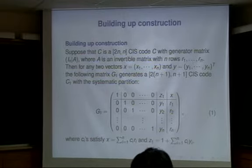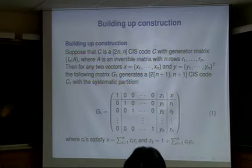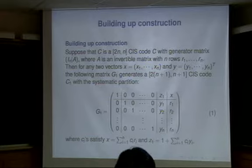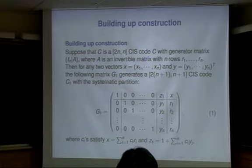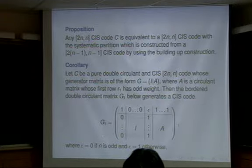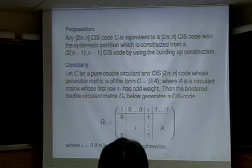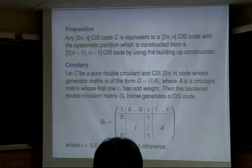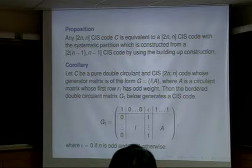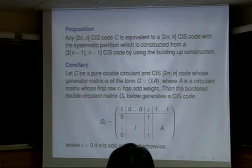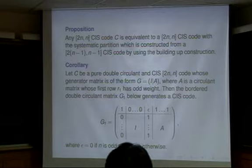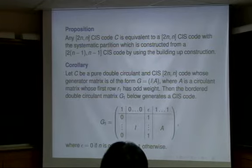The main theorem is: any [2N, N] CIS code is equivalent to the same length CIS code with a systematic partition — in other words, [I | A] with an invertible A. But that special form is constructed from a length-(2N-2) CIS code using the building-up construction. So once you have a classification of codes at a certain length, you can classify all CIS codes with lengths up to higher values. When 2N equals 2, we had the unique CIS code with generator matrix (1,1). When 2N was 4, we had two codes. When length is 6, there are six inequivalent CIS codes.